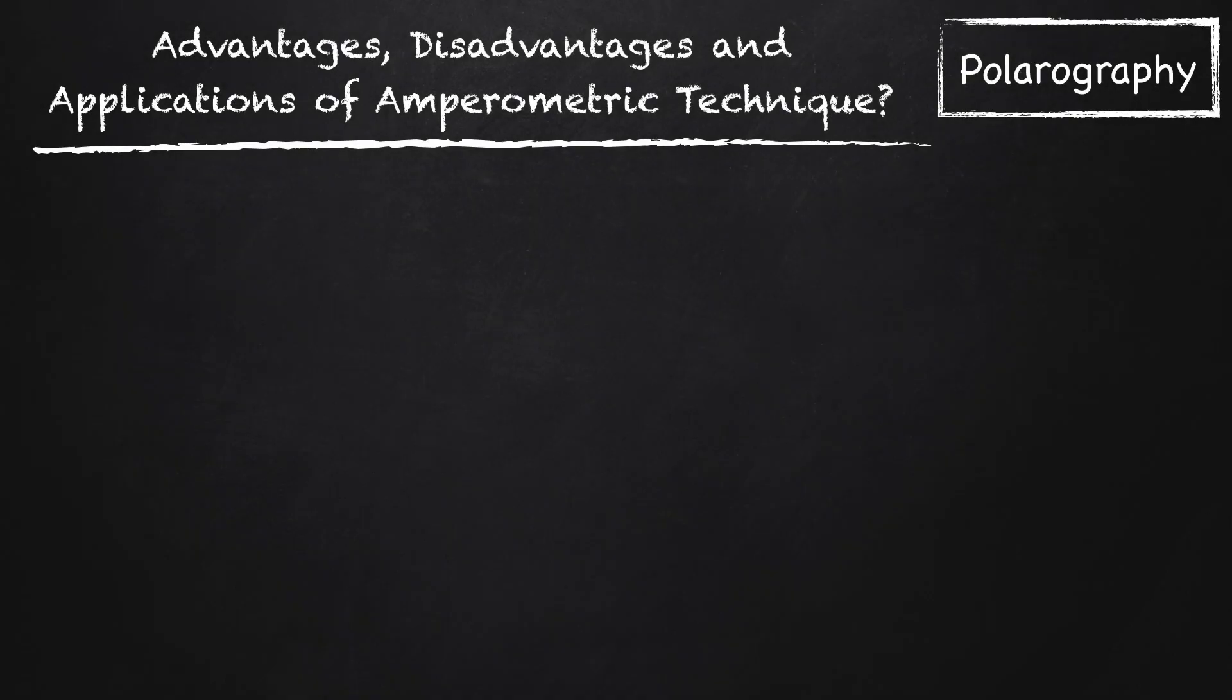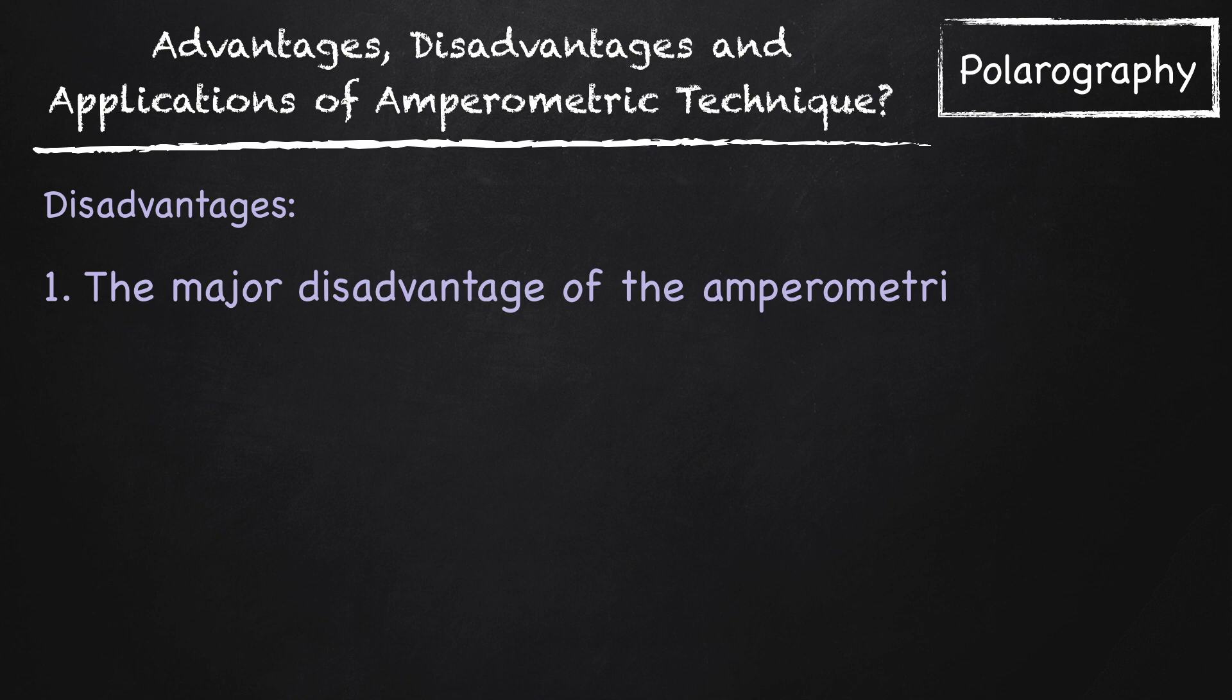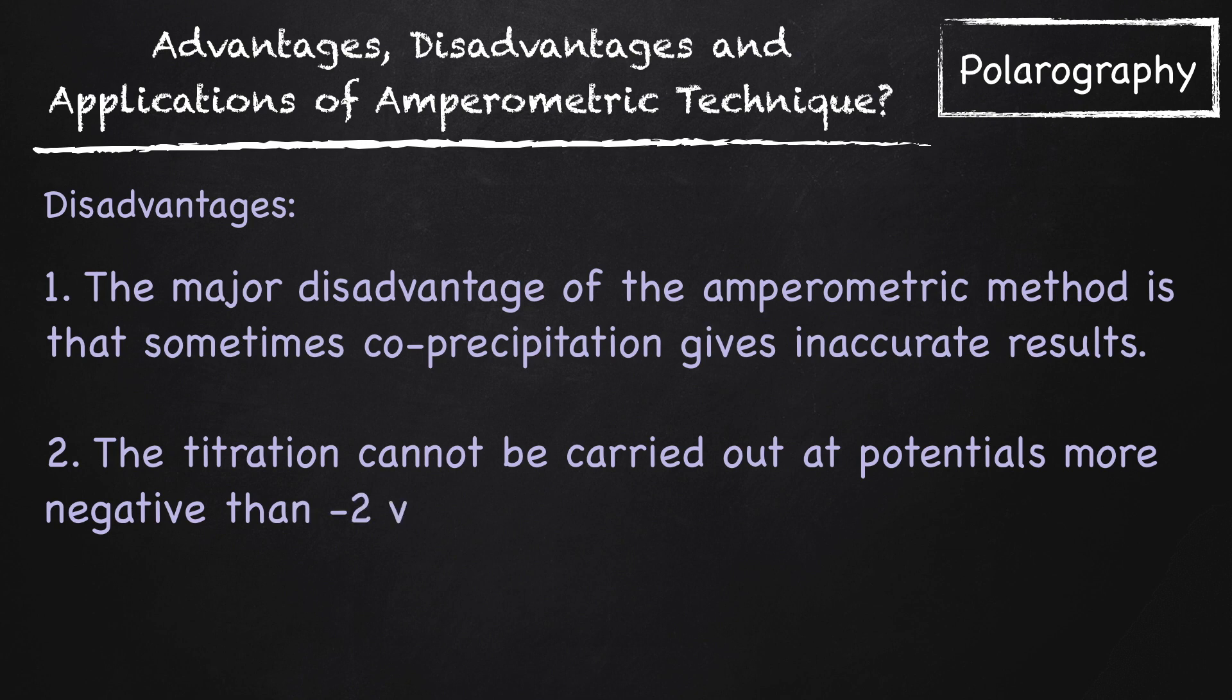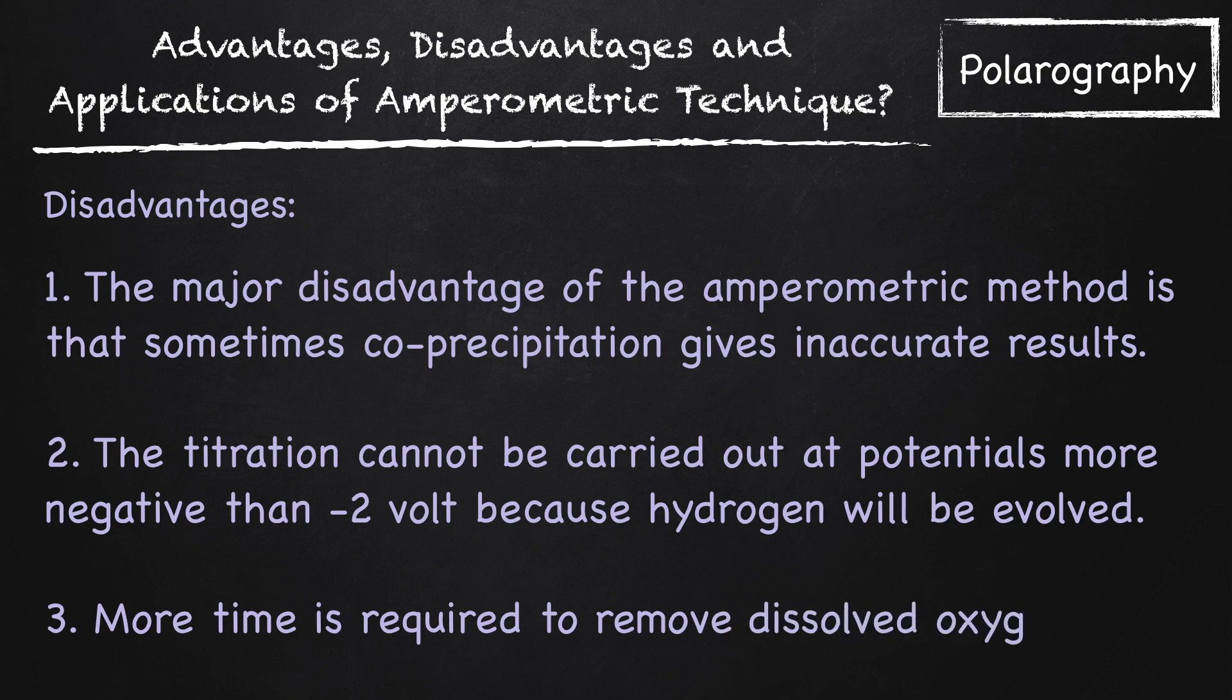Still, the method also has some disadvantages. The major disadvantage of the amperometric method is that sometimes co-precipitation gives inaccurate results. The titration cannot be carried out at potential more negative than minus 2 volt because hydrogen will be evolved. More time is required to remove dissolved oxygen.